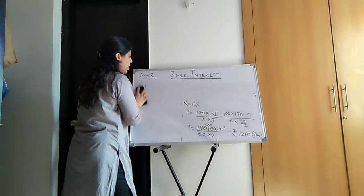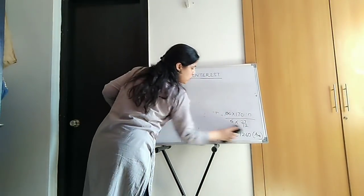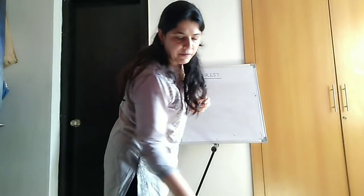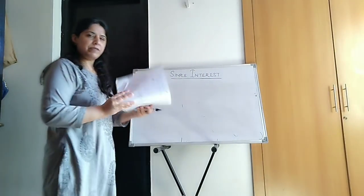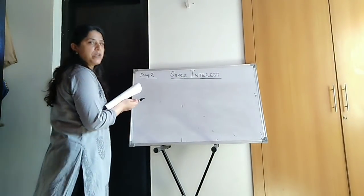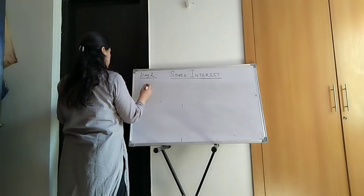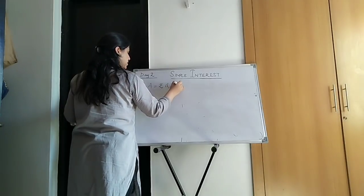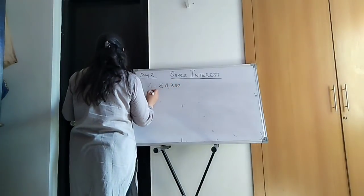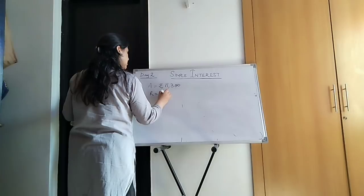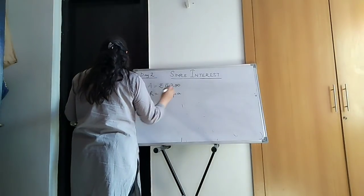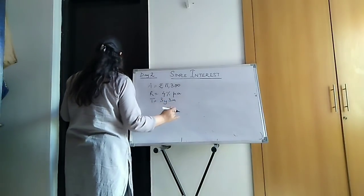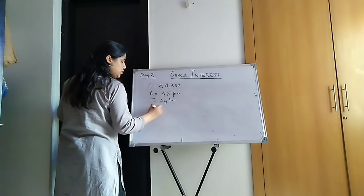Now, the simple interest is not given. They are giving you the amount. Just write down this question. I am just writing the data. This is question number 5, second part of your book. Amount is 11,300. Then the rate is 4% per annum. Time is 3 years and 3 months. And you are asked to find the principle.